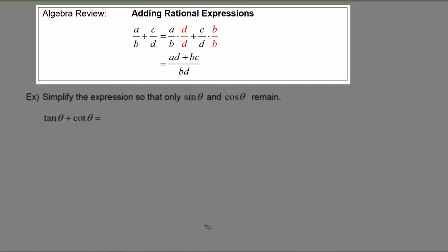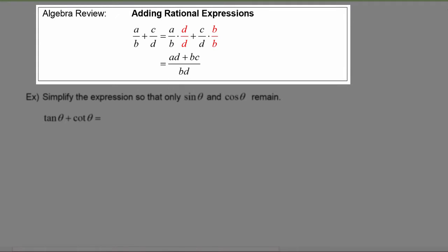First, a short algebra review. When you're adding rational expressions whose denominators are unlike, we multiply each rational expression by one in the form of the missing piece of the denominator over itself. The denominators are b and d, so this one gets multiplied by d over d, and this one by b over b. So the numerator becomes ad plus bc over the product of those two denominators. You can go in one step directly to that result without having to show this intermediate work.